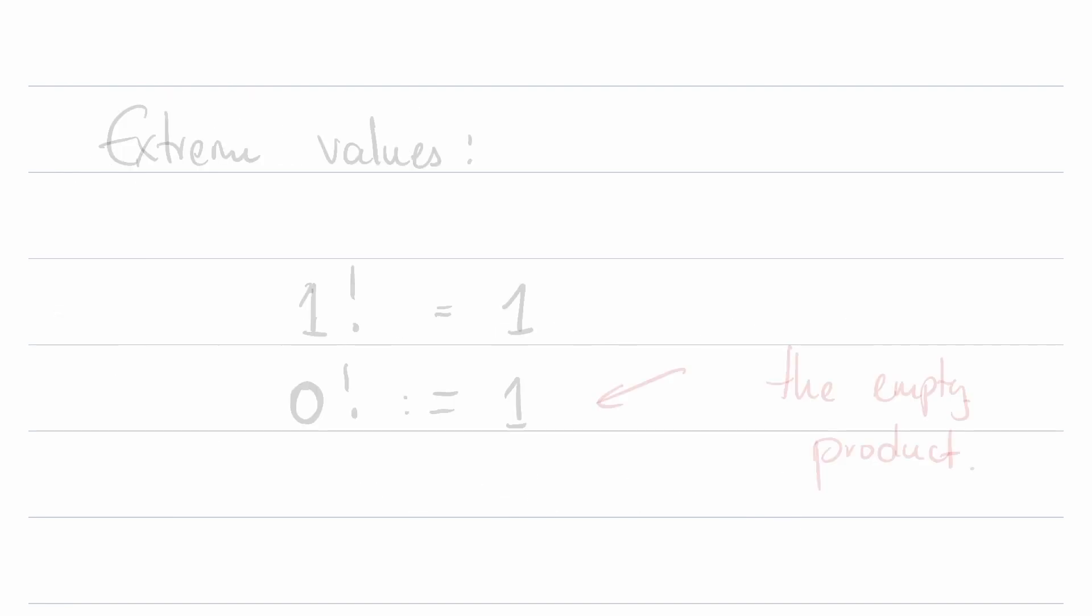To make sure we understand what this means, we also have to take care of the extremal values. So let's talk about the extreme values. So what would 1 factorial be? Well, it's going to be just 1.